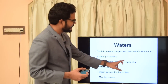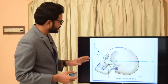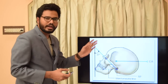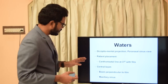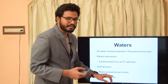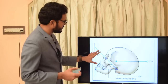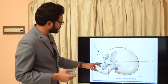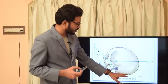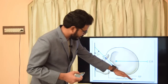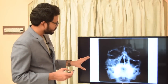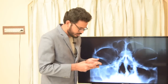In Waters view, the cantho-meatal line is oriented at 37 degrees with the film. The central beam is perpendicular to the film and focused towards the maxillary sinus. As illustrated, the cantho-meatal line is oriented at 37 degrees compared to the long axis of the film. It is called occipital mental view as x-ray is projected from the occipital part towards the mental process.